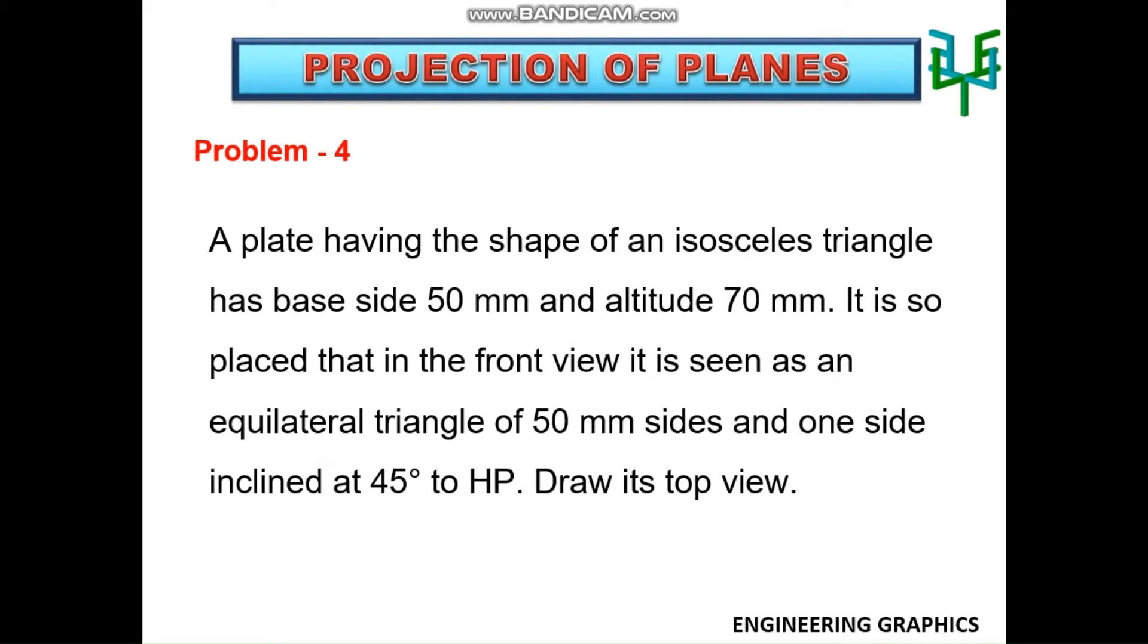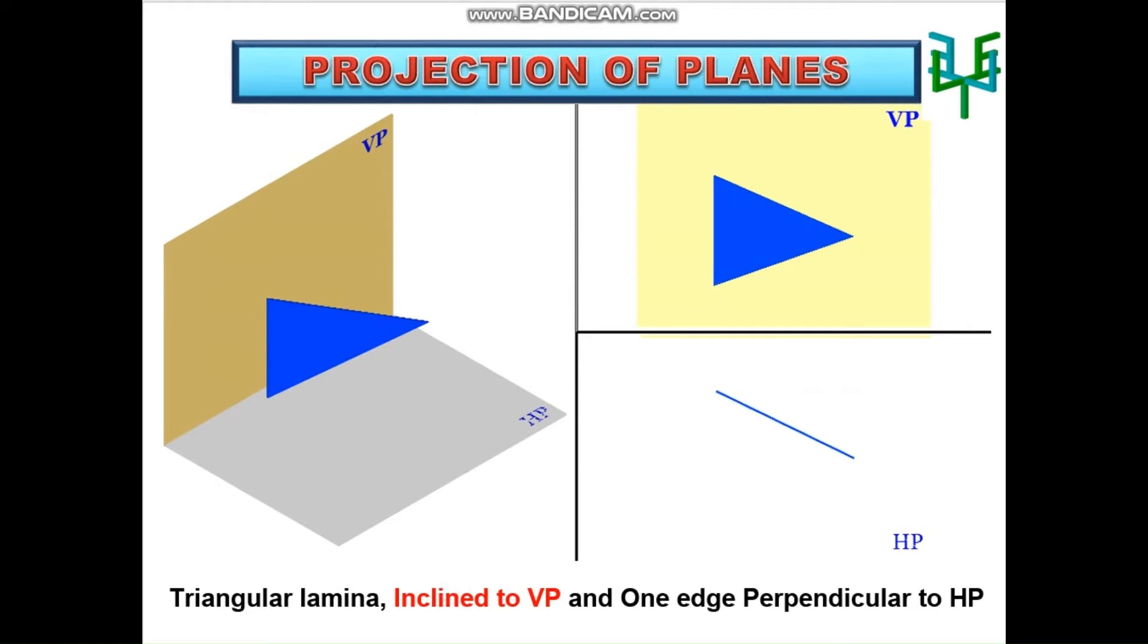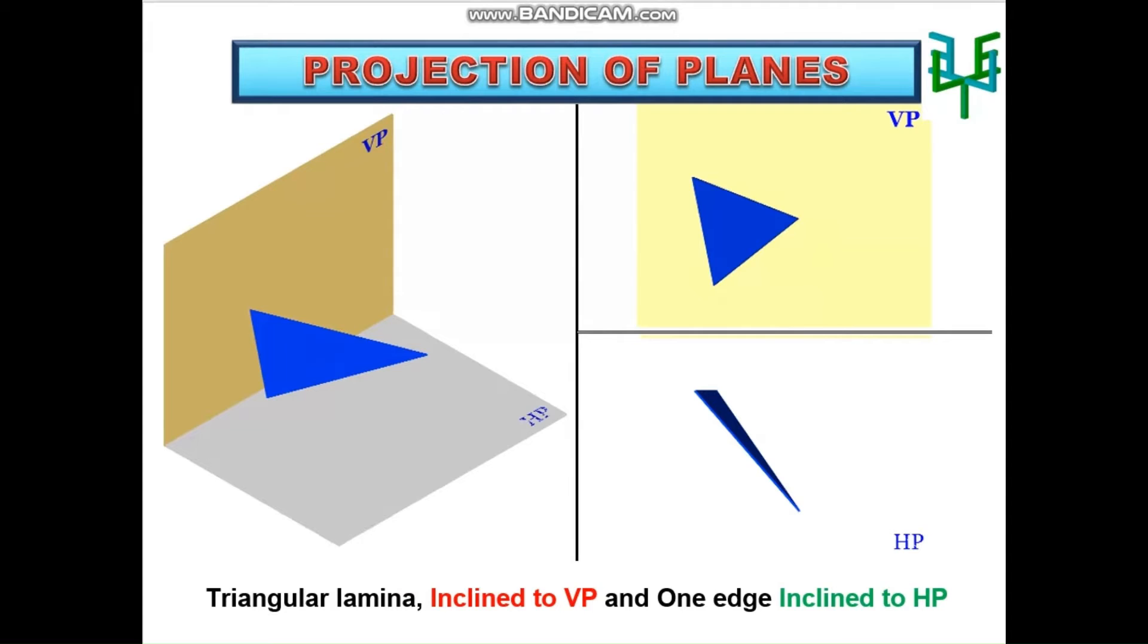This is the three-dimensional and two-dimensional representations. Initially the triangular lamina is parallel to VP with one side perpendicular to HP. Then the lamina is tilted to make it inclined to VP. Tilting is done until the elevation looks as an equilateral triangle. Then the edge is tilted to make it inclined to HP.